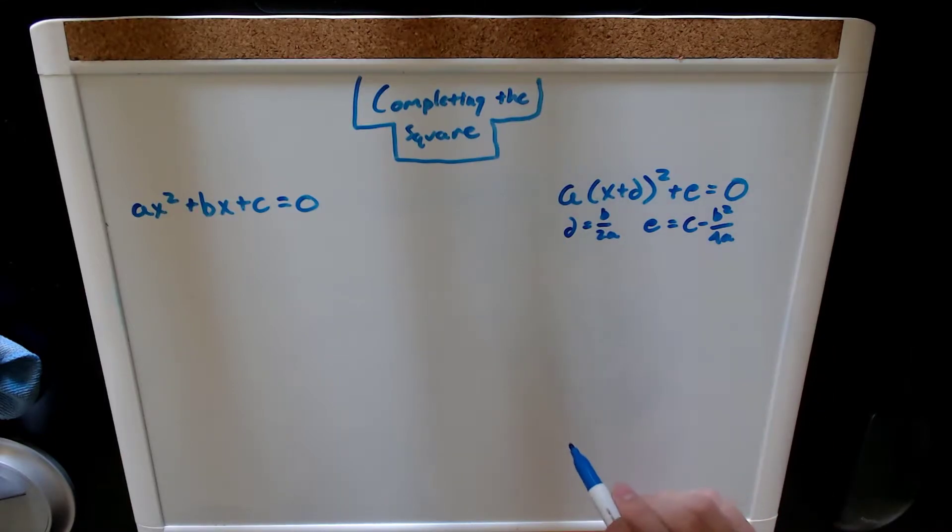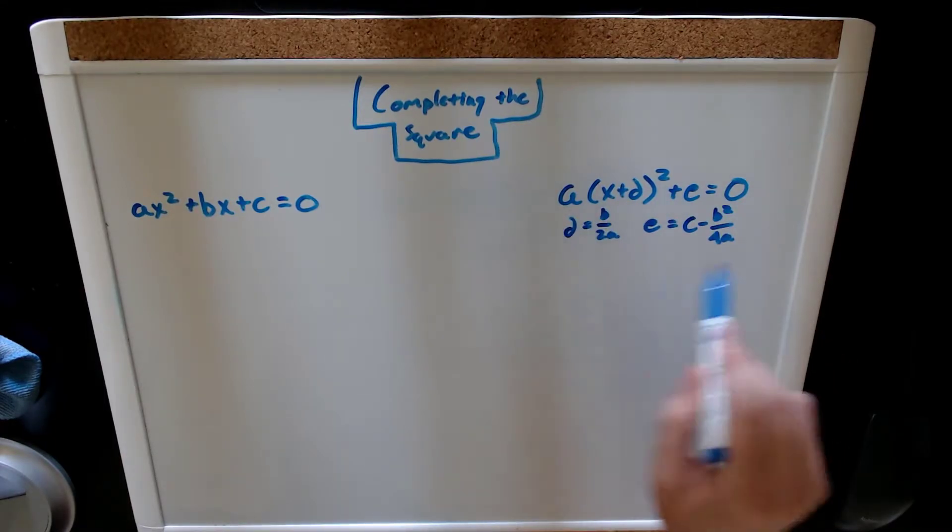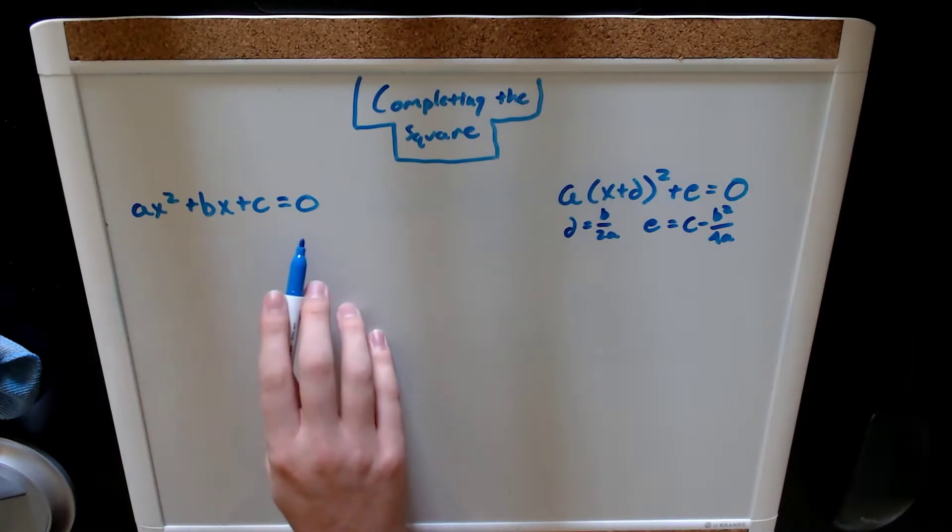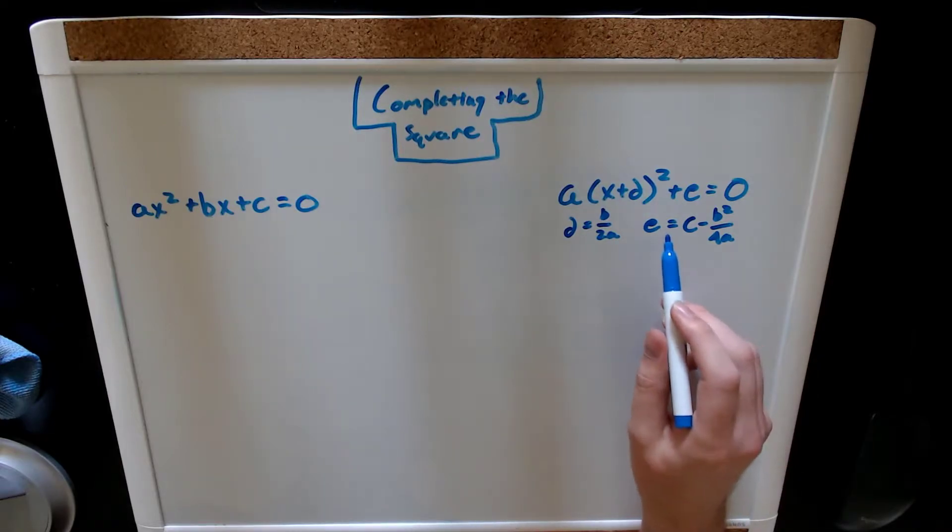Now, your first question might be, why? This form is a mess. Why would I possibly want to take this nice and clean form and make it into this?